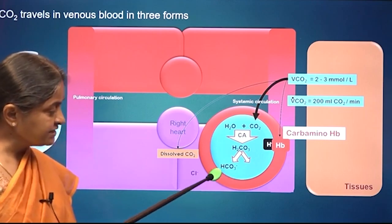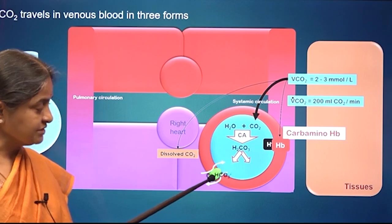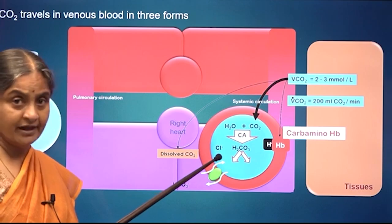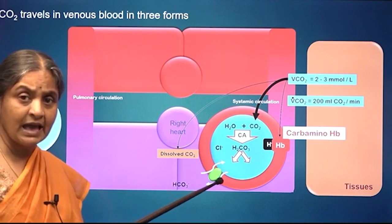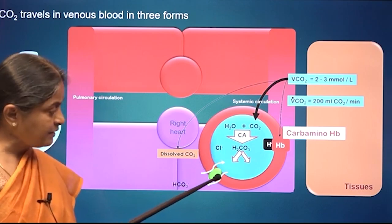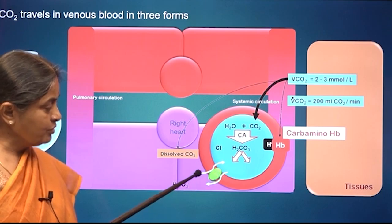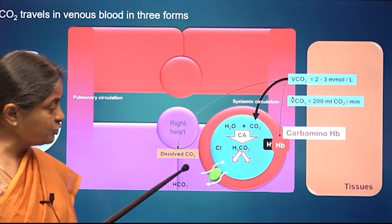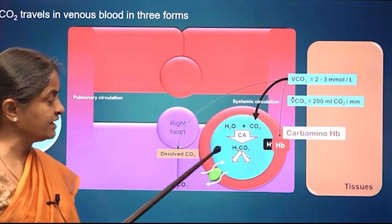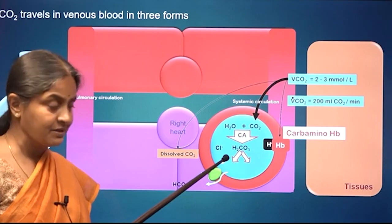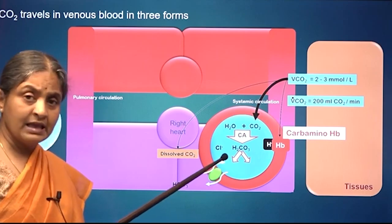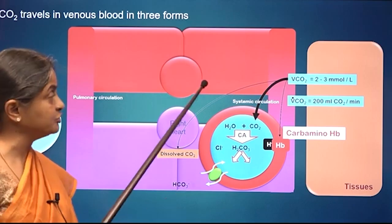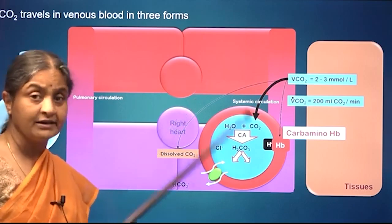The bicarbonate is eliminated by an anion exchanger in the red blood cell membrane, which exchanges bicarbonate with chloride ions. This is the famous hamburger chloride shift. Therefore, the concentration of chloride in venous blood is going to be less than that in arterial blood because some chloride has translocated into the red blood cells, and the concentration of bicarbonate in venous blood is going to be more than in arterial blood.